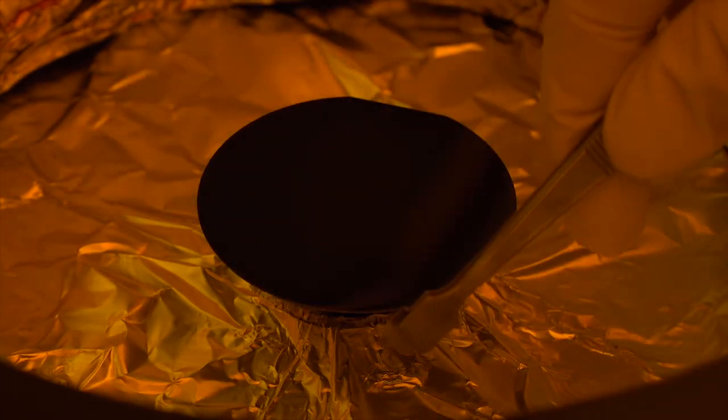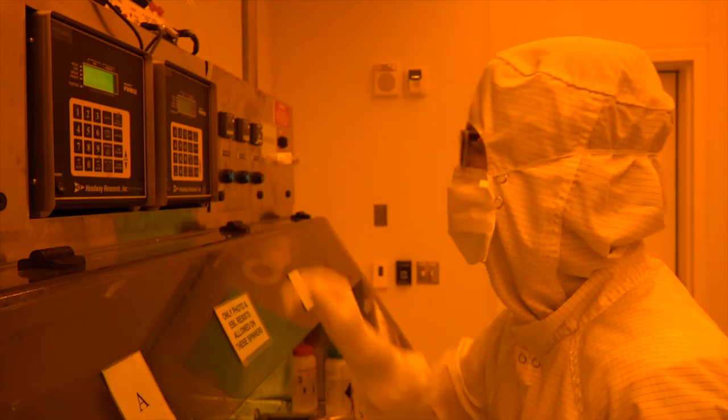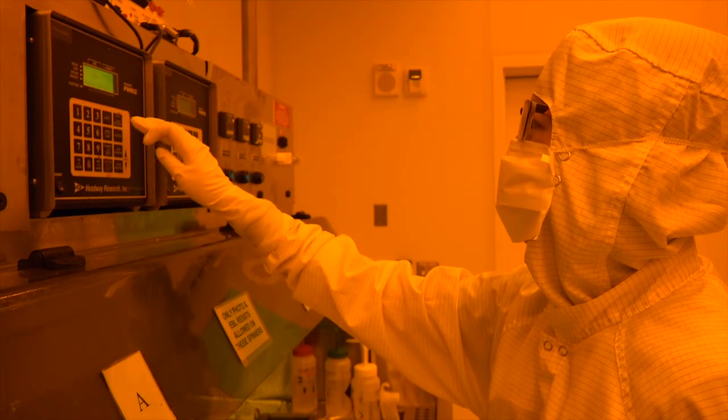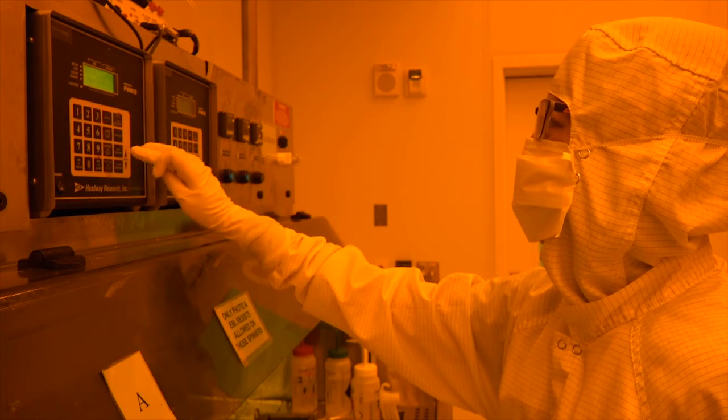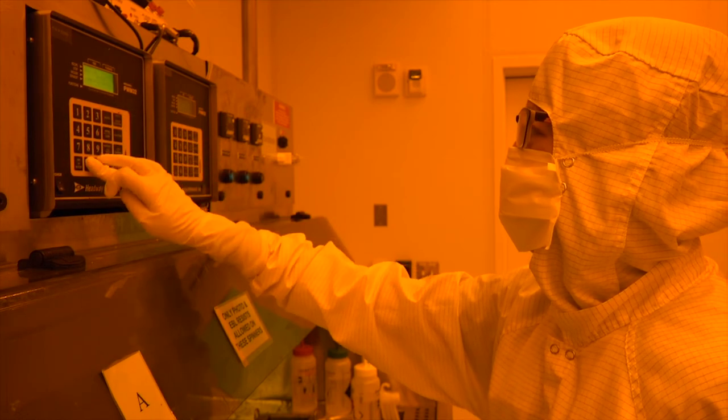We place the wafer on the spin chuck, taking care to get the wafer nicely centered. With the wafer centered, we turn on the vacuum to hold the wafer in place. We program the spin coater controller with the spin speed and time we wish to use. In this example,